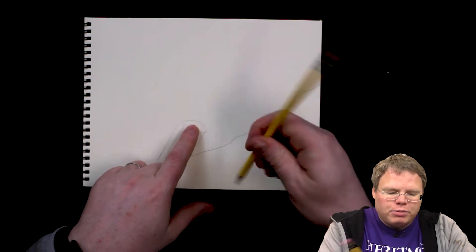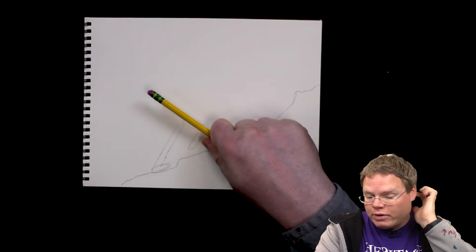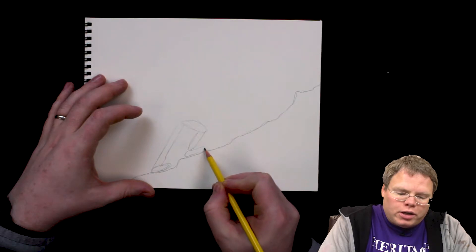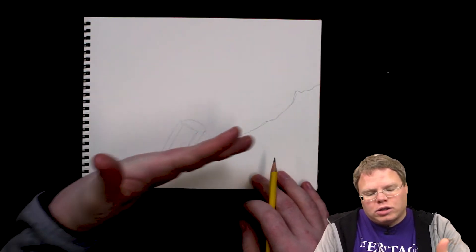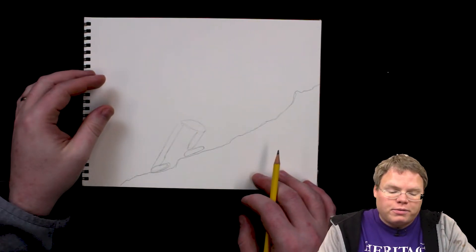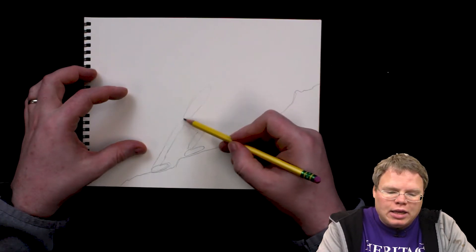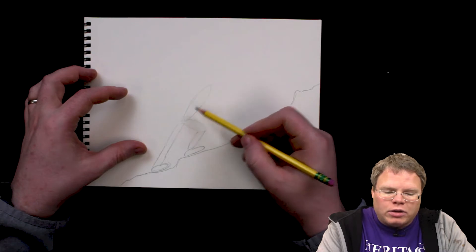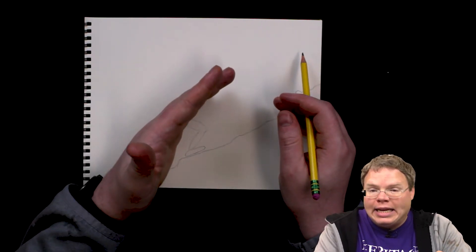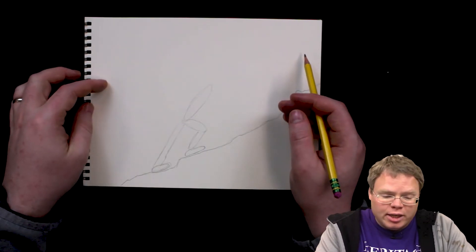And then this part is even a little bit diagonal going that direction. And then his other foot, and his feet are diagonal because they're going up the edge of the mountain here. And then his body is going to be diagonal leaning into it as he's walking up this hill.